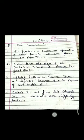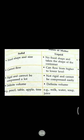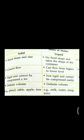Fourth: Solids do not flow like liquids because their molecules are tightly packed. Part G — Differentiate between solid and liquid. Solid: fixed shape and size, cannot flow, rigid, cannot be compressed a lot, definite volume. Examples: pencil, table, apple, tree.